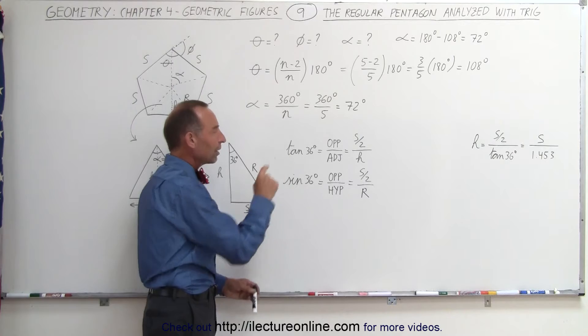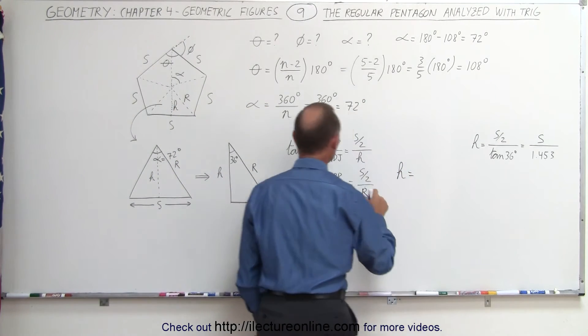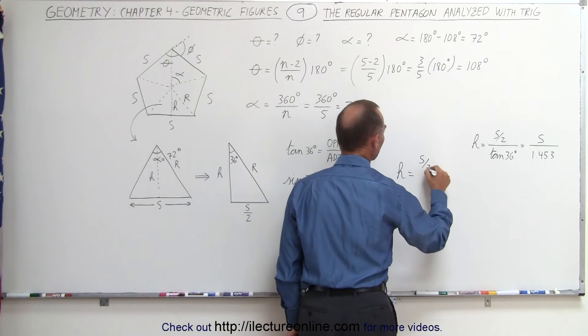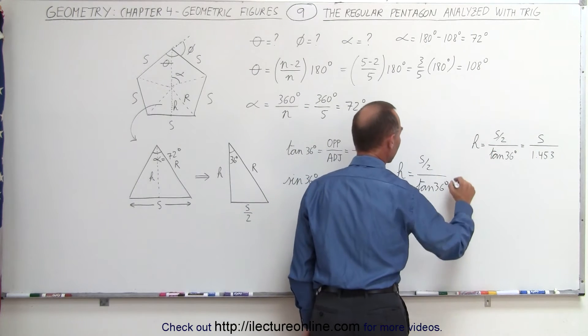If you then solve that equation for h, let's see what we get. We can then say that h is equal to, when we bring h over here, that will be equal to s over 2 divided by the tangent of 36 degrees, and now that begins to look familiar.